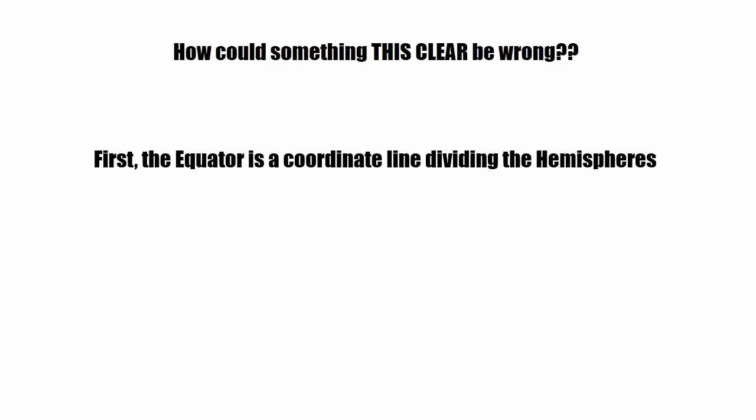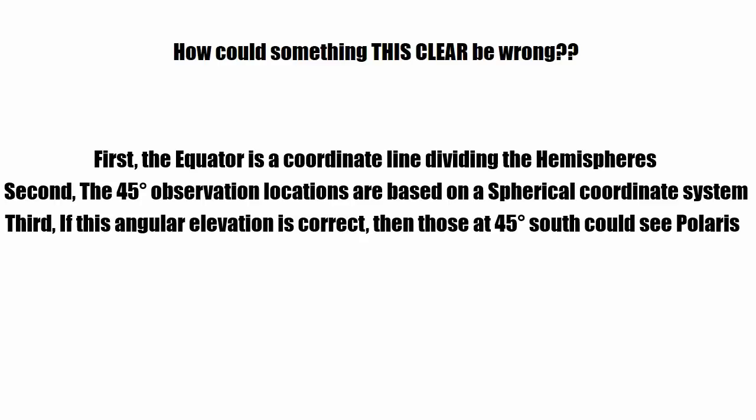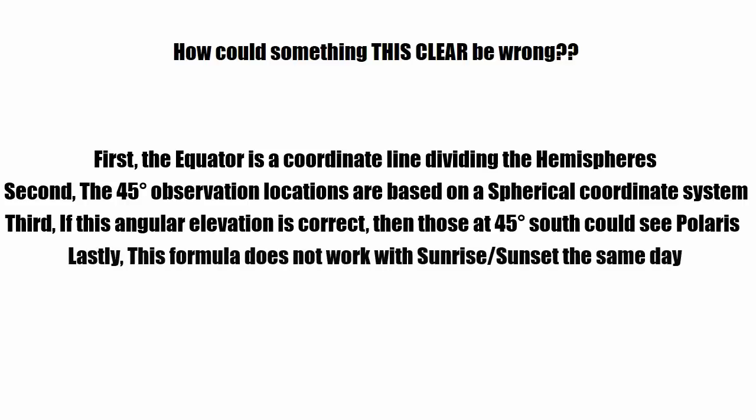First of all, the equator is a coordinate line dividing hemispheres, which is the reason why it's there. It has no purpose on any flat map used by flat earthers. None. Second, the 45 degree observation locations are based on a spherical coordinate system, not a flat coordinate system. Third, if this angular elevation is correct, then those at 45 degrees south could see Polaris, just by the angle that you're looking. And lastly, this formula absolutely does not work with the sunrise and sunset on the same day.